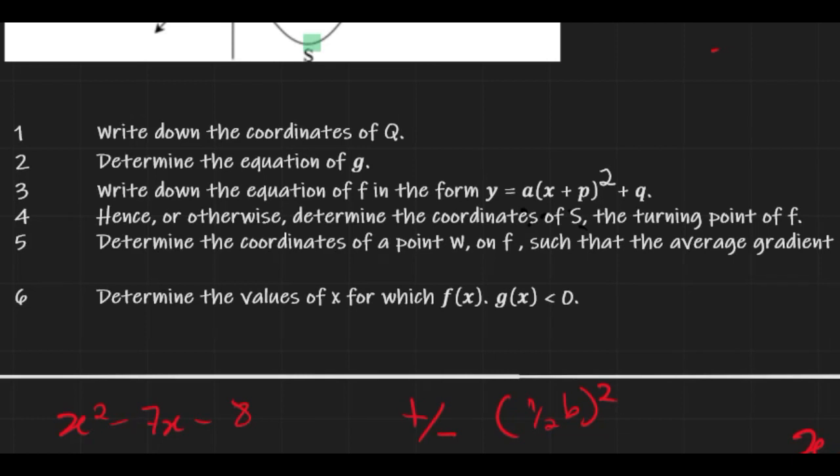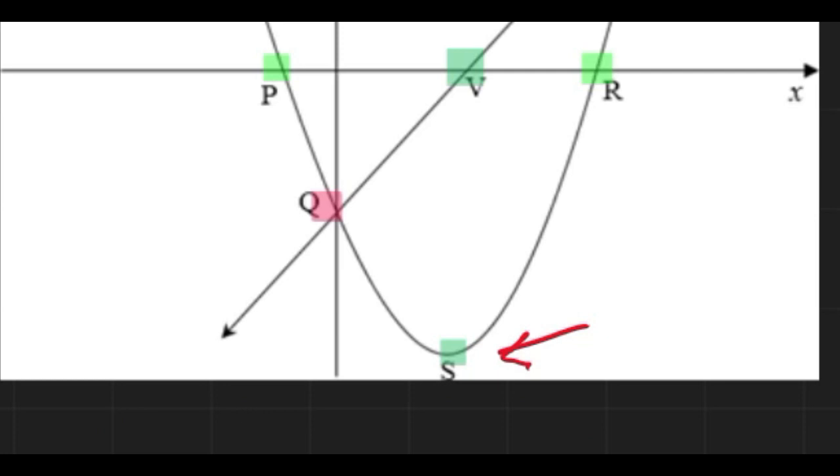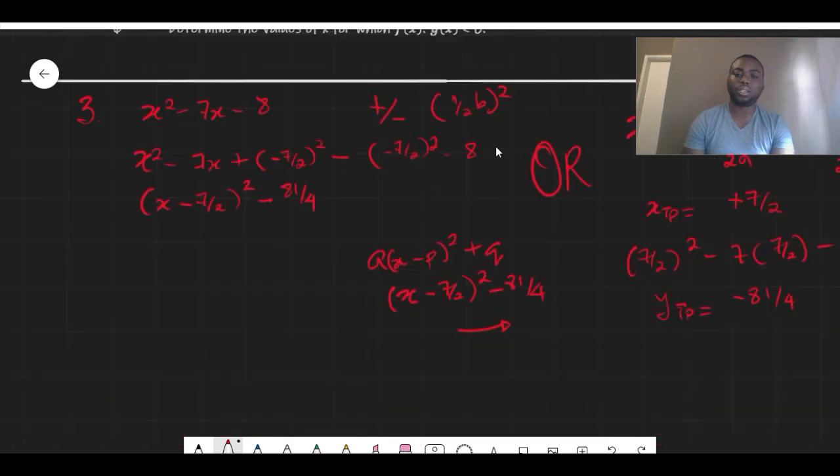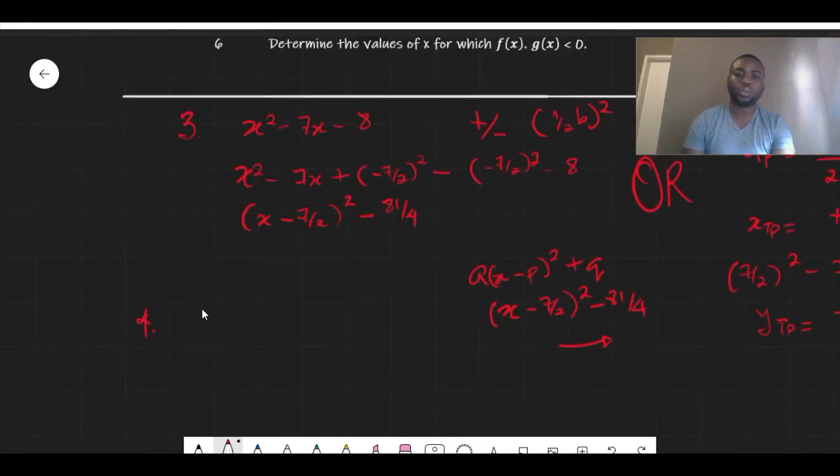So question four says hence or otherwise determine the coordinate of S, which is the turning point of f. Now S is our turning point, and since the previous question we already did our turning point form, those values which we got is our turning point. So all we just need to do is use those values.